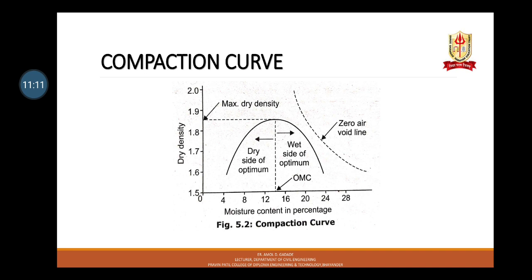This is the compaction curve, plotted with moisture content in percentage on the x-axis and dry density on the y-axis. It is observed that dry density initially increases with an increase in water content till maximum density is attained. With further increase in water content, the dry density decreases. At a water content lower than the optimum, the soil is stiff and has a lot of void spaces, so the dry density is low. As water content increases, soil particles get lubricated, slip over each other, and move into densely packed positions, increasing the dry density.